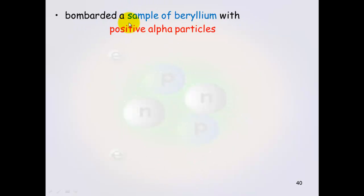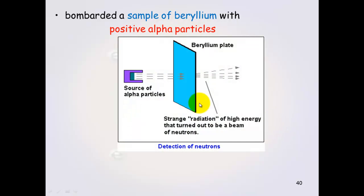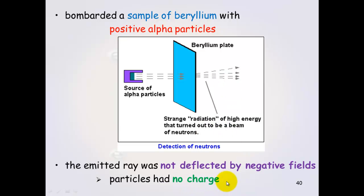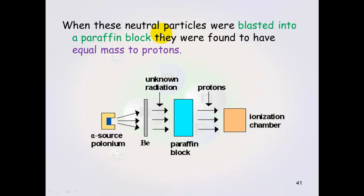What he did was bombard a sample of beryllium with positive alpha particles. So it's a little bit similar to Rutherford's alpha particles at the gold foil. But with this, what he did was this was a source of alpha particles. And he bombarded this beryllium plate. And what happened was something came out of the other side. An unknown radiation. But this unknown radiation was not attracted or repelled by positive or negative forces. So it had to have a neutral charge. So they had no charge, these particles. So when these neutral particles were then blasted into a paraffin block, they were then weighed. And it was found to have an equal mass to protons.